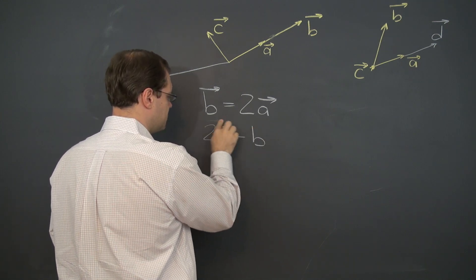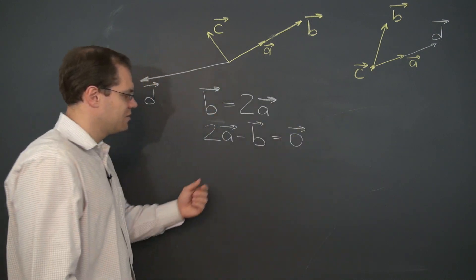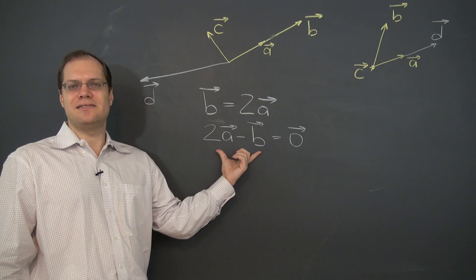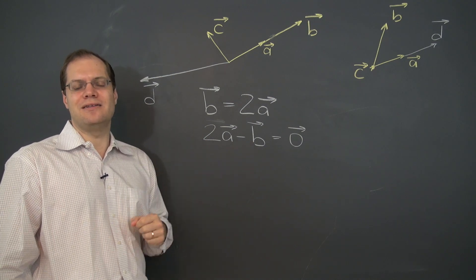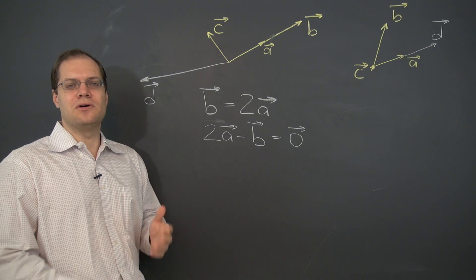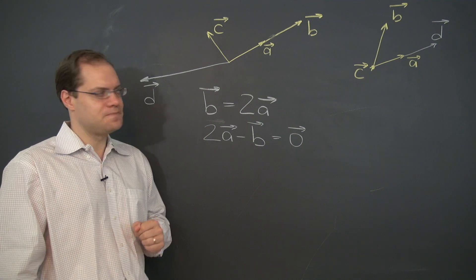but let's write it as 2a minus b equals zero. Okay, so this is our fancy zero. We can add as much of it as we'd like to any linear combination and it will change the coefficients of that linear combination without changing its value.